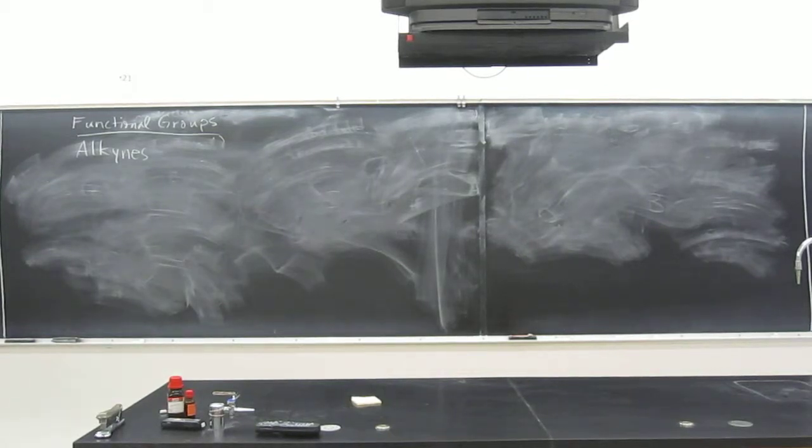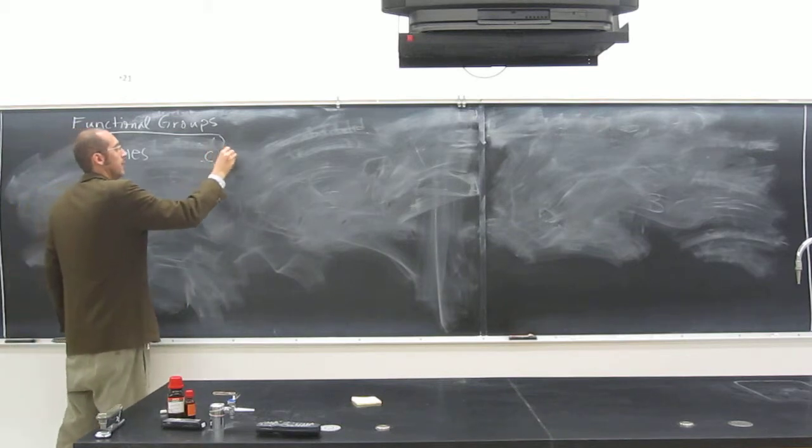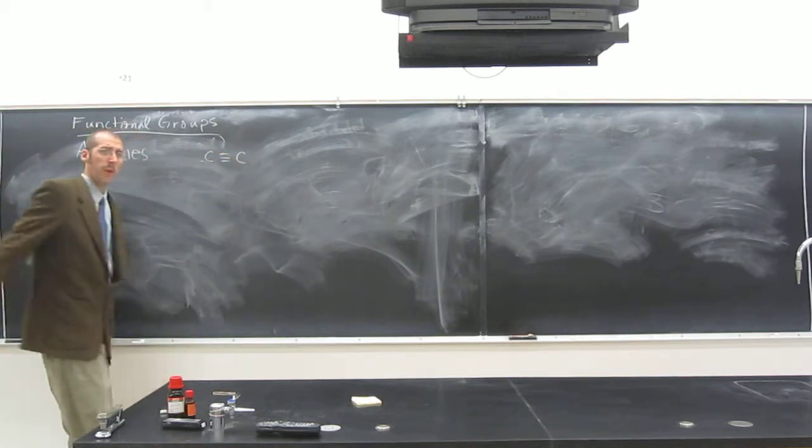Okay, so alkynes are anything with a carbon triple bond in it.